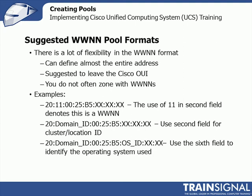Some suggested formats: there's a lot of flexibility in the node name format, and I suggest you leave the OUI alone. You don't use WWNNs a lot — you don't zone against them normally, you zone against port names. But it is nice to look up a node name and get information. The second field you can use to denote it as a node name — something like 11 or 00 — different from the port name. You could also use domain ID, location ID, or OS. Whatever you set up for the node name, use the same naming format for port names — keep it nice and consistent.